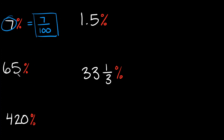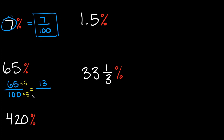The next one: 65% written as a fraction would be 65 over 100. We can reduce this fraction — the top and the bottom are both divisible by 5, so I'm going to divide by 5 on the top and on the bottom. 65 divided by 5 is 13, and that goes over 100 divided by 5, which is 20. This is as reduced as we can get it, so our final answer here would be 13 over 20.